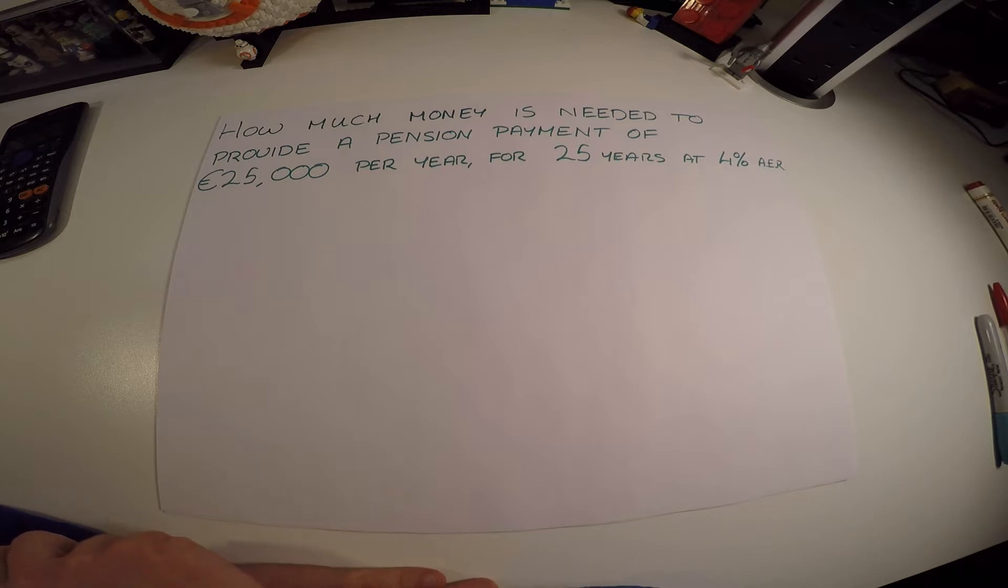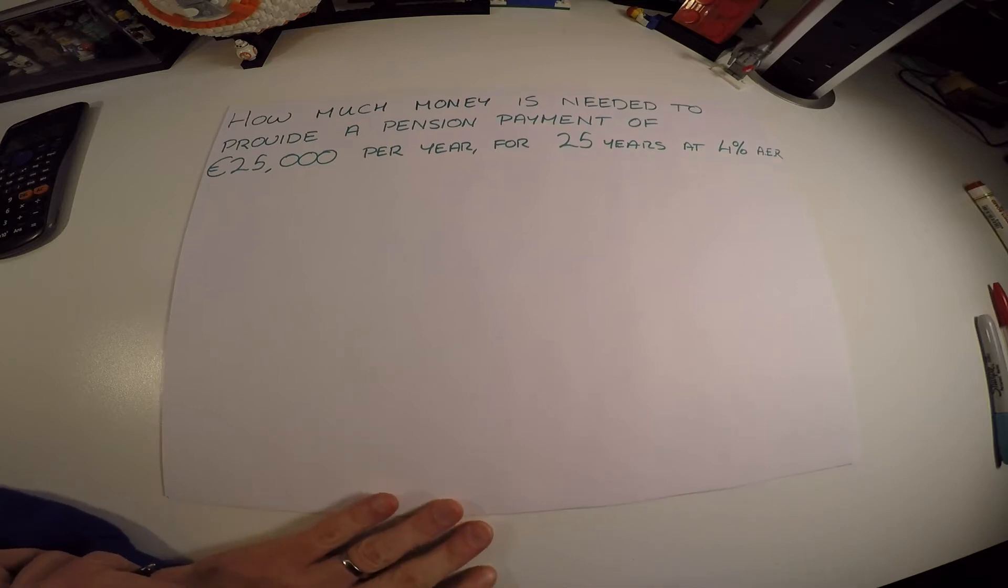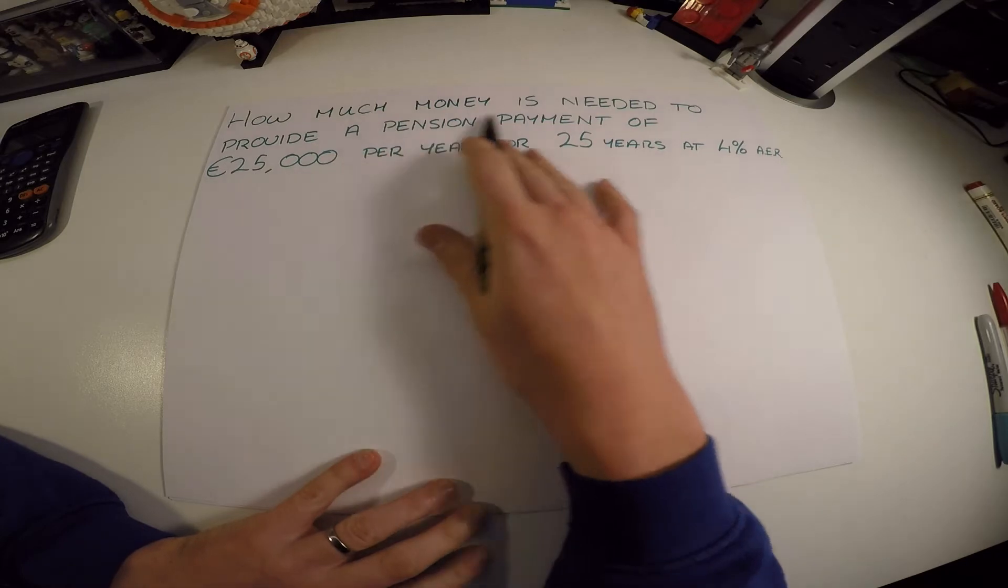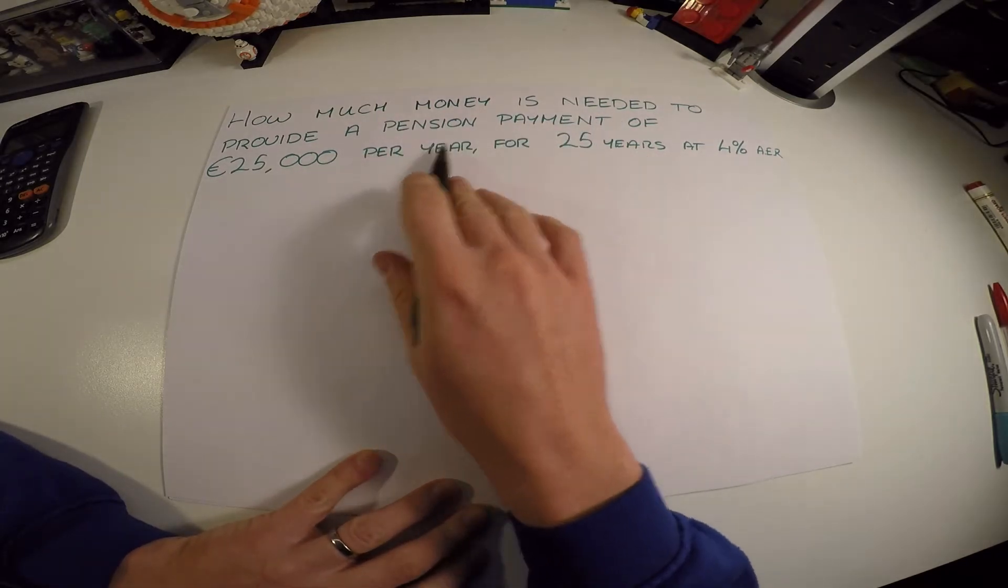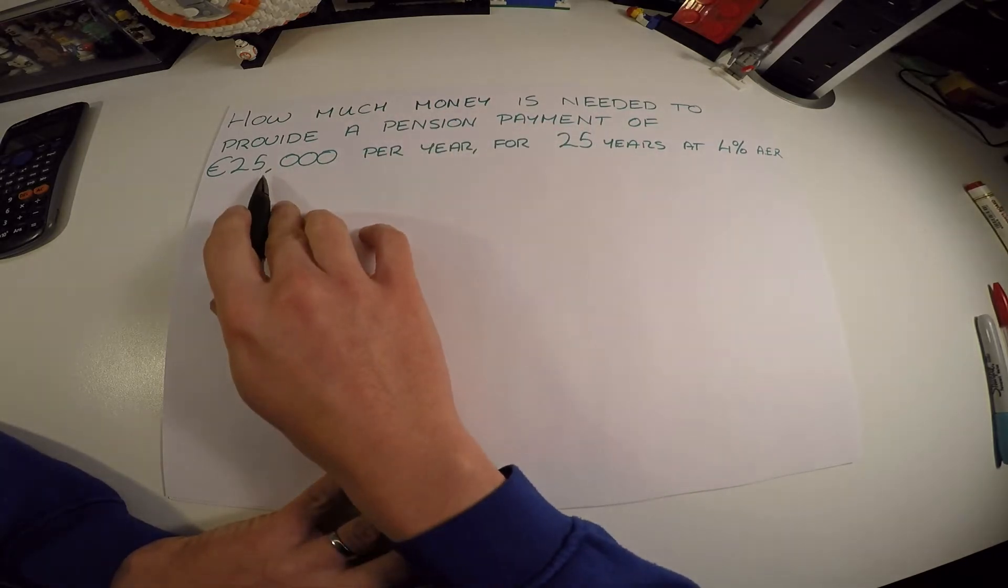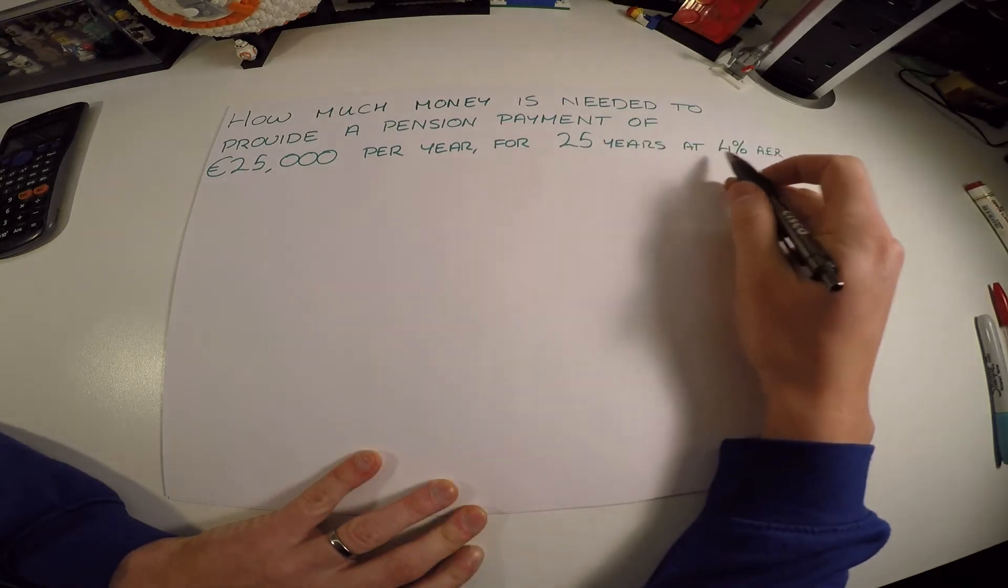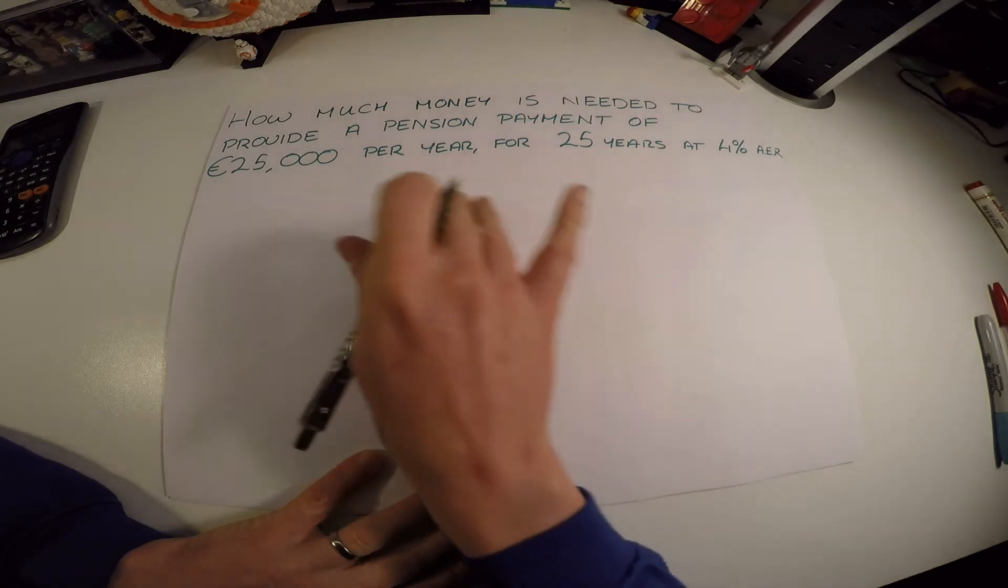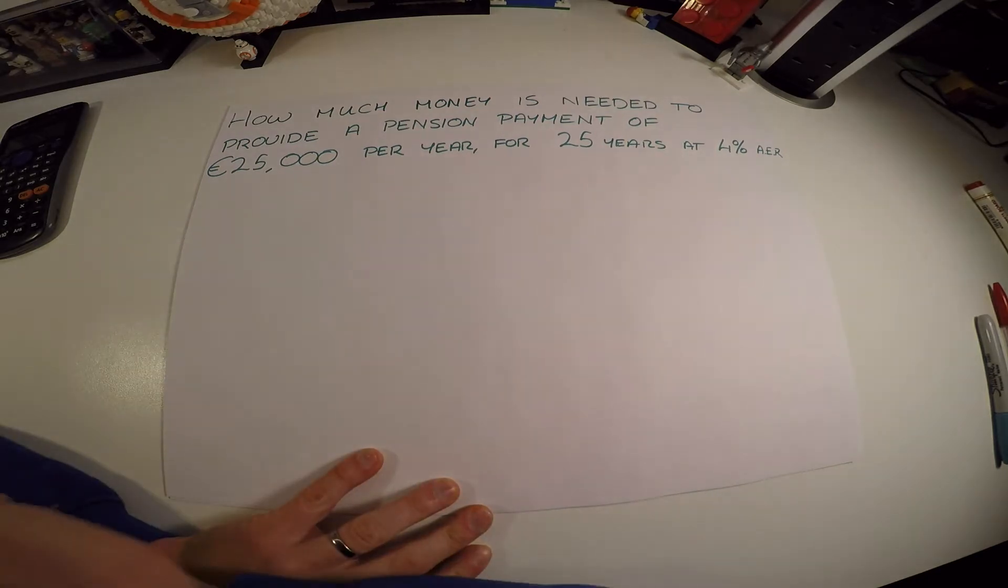Okay, now we're going to look at a pension question in financial maths using a geometric series to solve it. The question is this: how much money is needed to provide a pension payment of 25,000 per year for 25 years at 4% AER? So traditionally a question students find difficult, so let's try and do it in as many steps as possible and see if we can build it up to the geometric series to solve.